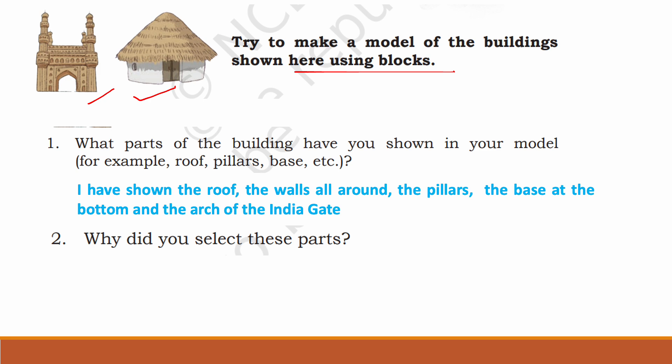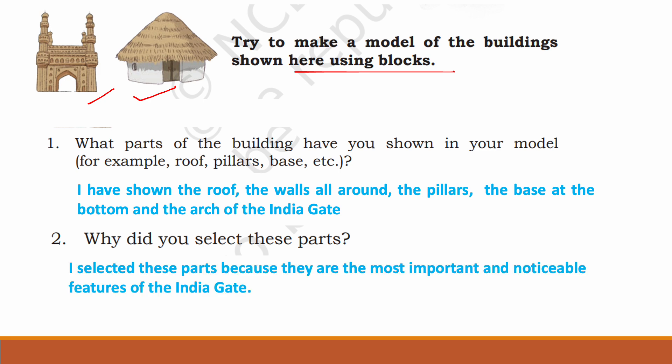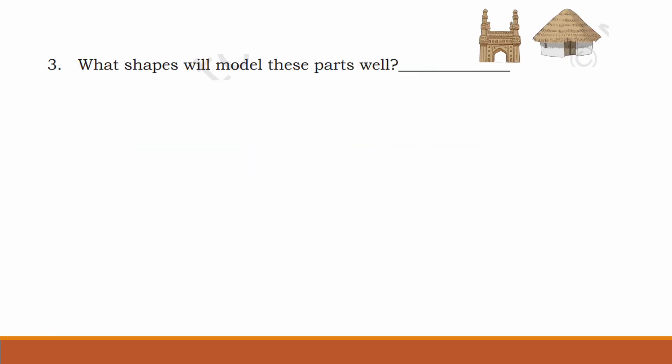Why did you select these parts? I selected these parts because they are the most important and noticeable features of the India Gate. What shapes will model these parts well? The shapes used include cubes, cylinders, arches, cone, triangle, and rectangle.